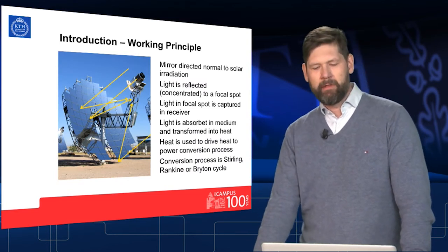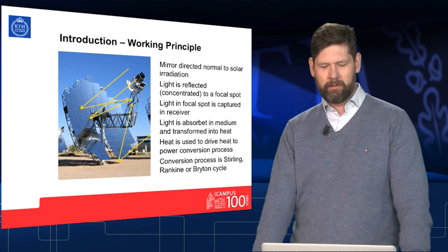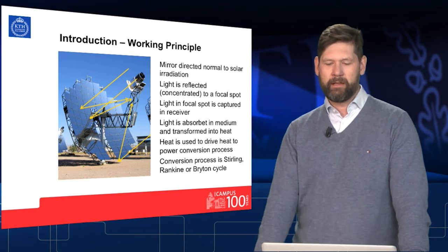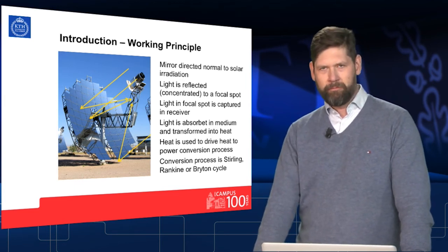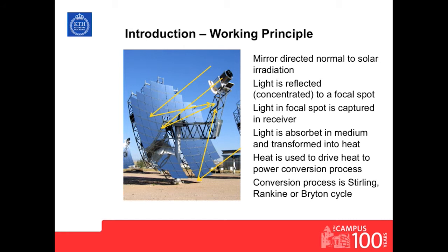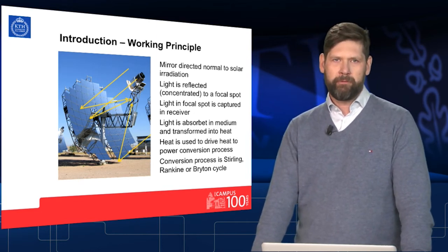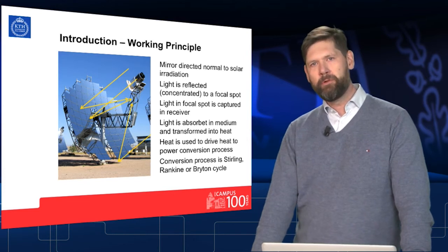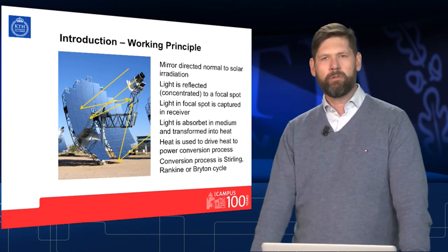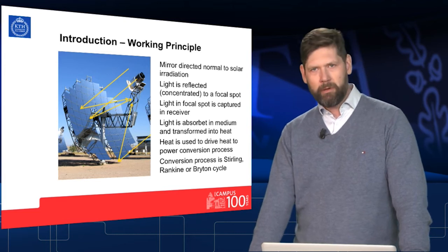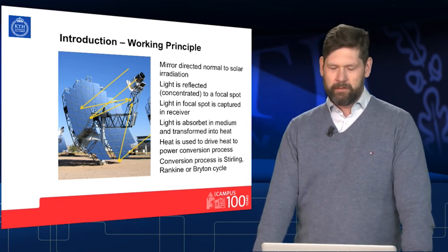The key principle of this concentration technology is that we have a mirror directed normal to the solar light irradiation, the light is reflected to a focal spot, and captured in a solar receiver where it is absorbed, heating a metal. The metal heats a transfer fluid such as water, which then drives the steam turbine or other power generation cycles, such as the Brayton gas turbine cycle, the Rankine steam turbine cycle, or even the Stirling engine cycle.